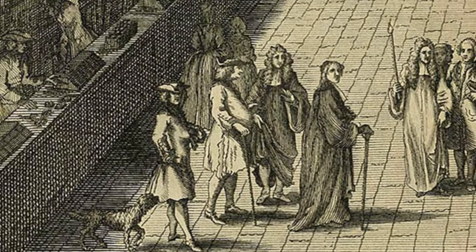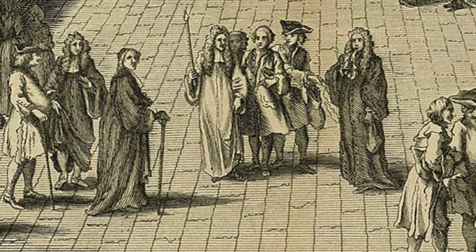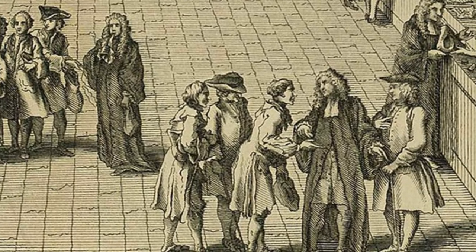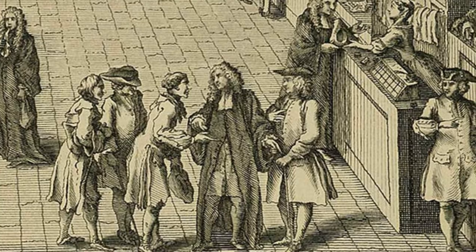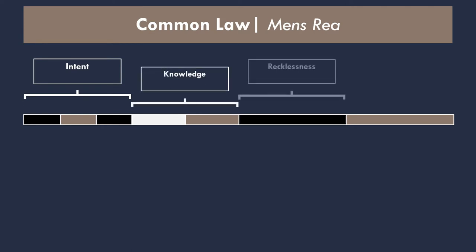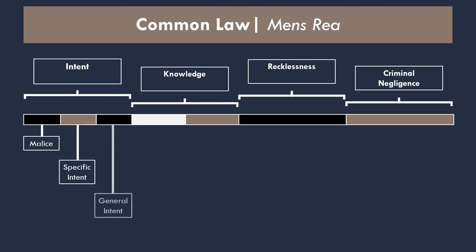Under the common law, and over the centuries, mens rea has been categorized, defined, and systematized by a myriad of judges, scholars, and academics. As is frequently the case with the common law, it's messy. For the purposes of this lesson, we will divide the common law spectrum of mens rea into four broad categories: intent, knowledge, recklessness, and criminal negligence. Intent will be further divided into three subcategories: malice, specific intent, and general intent. Knowledge can be divided into knowingly and willfully, while recklessness and criminal negligence will be addressed as singular concepts.